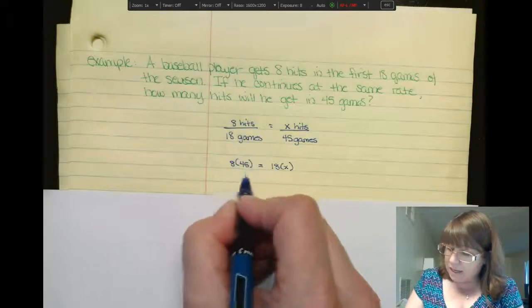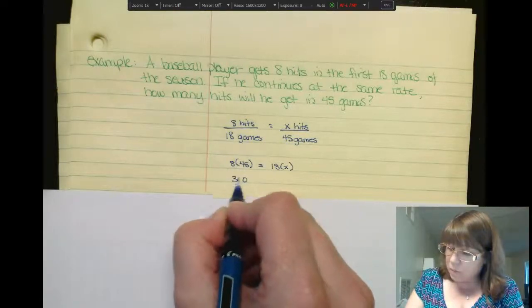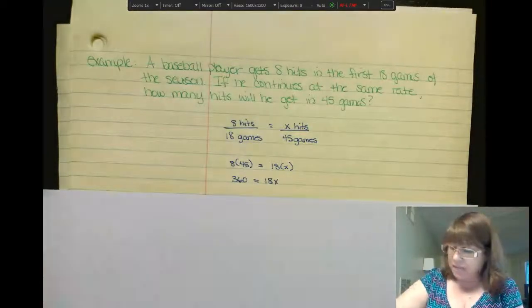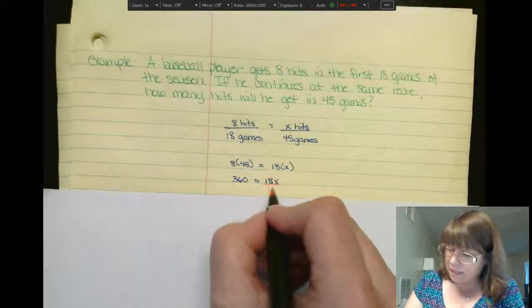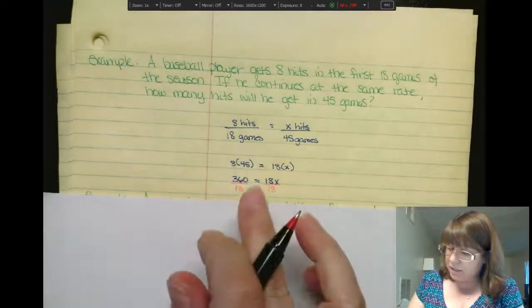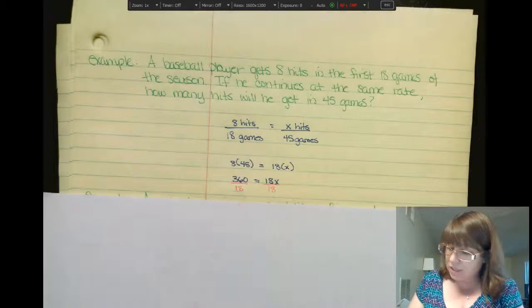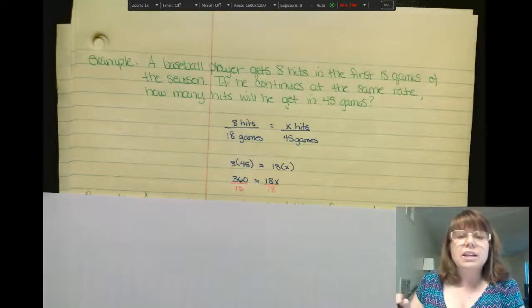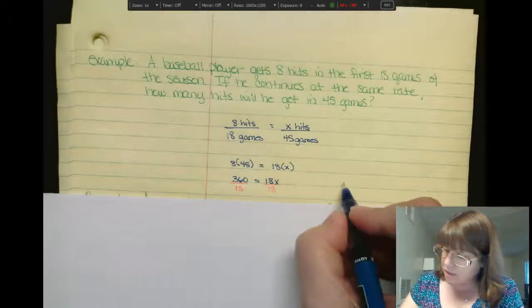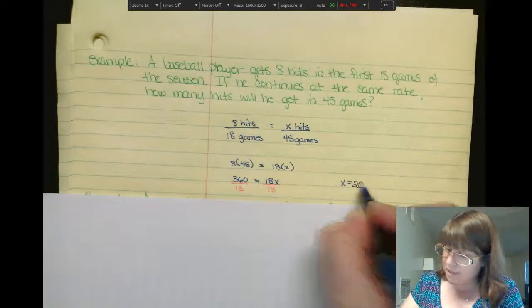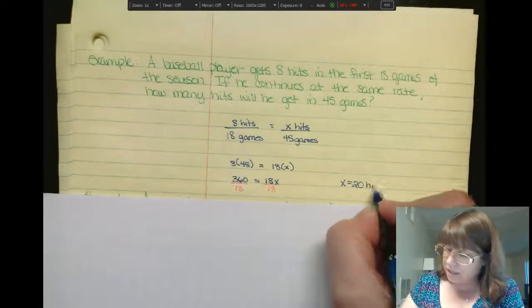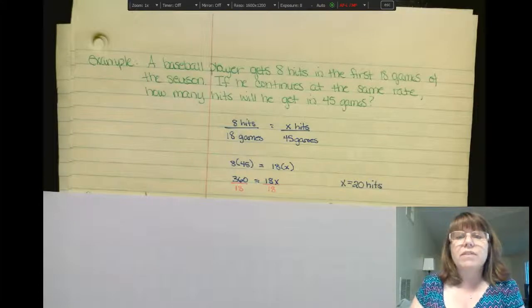Let's divide each side by 18. So we know that x equals 20, and therefore the baseball player should get 20 hits in 45 games.